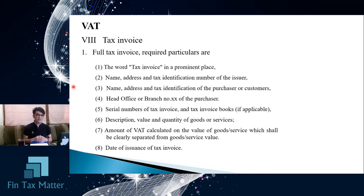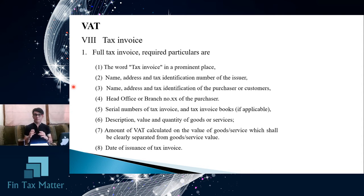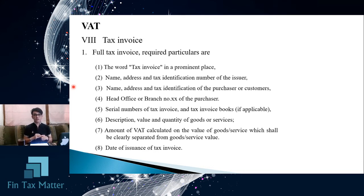The sixth element is the description, value, and quantity of the goods or service. The seventh is the amount of VAT calculated on the value of goods or service, which is the tax base. The VAT amount must be clearly stated in the tax invoice, and it must be shown separately from the value of goods or service. The eighth element is the date of issuance of the tax invoice, which shall be the date the tax point occurs.